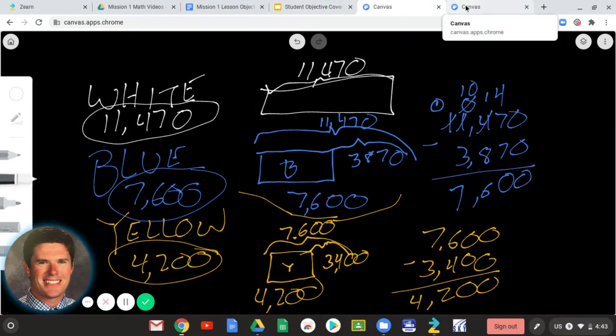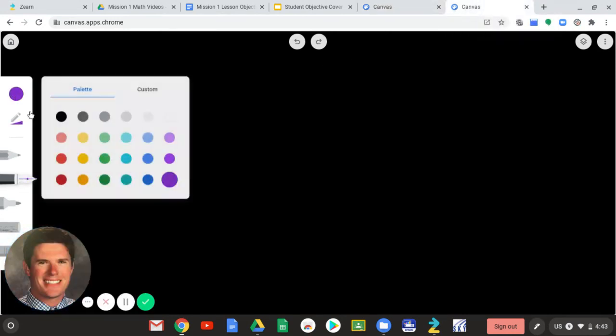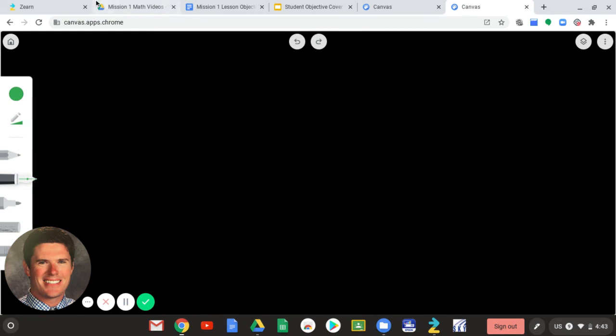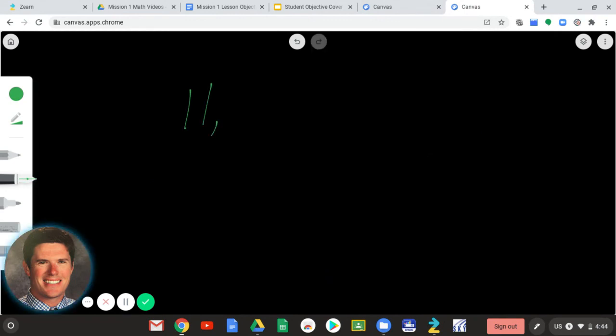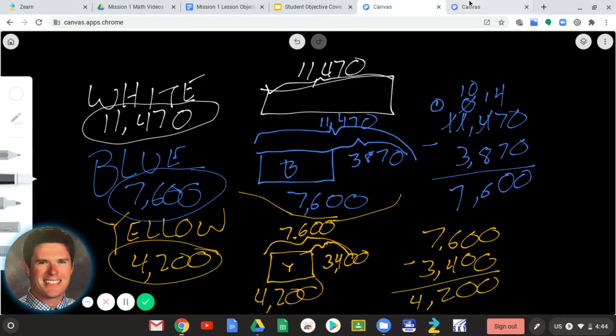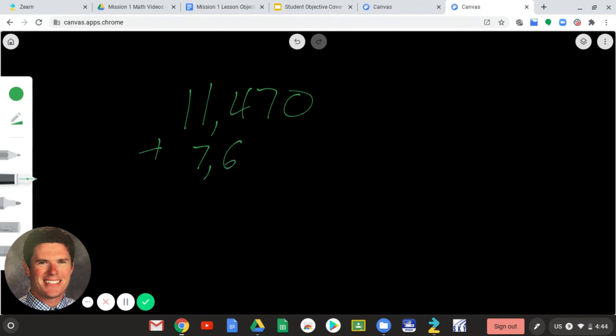So, I'm going to add them up, and I'm just going to do two at a time. So, if I had, let's start by adding my white and my blue. So, my white is 11,470 plus my blue was 7,600. And if I add them, 0 plus 0 is 0, 7 plus 0 is 7, 6 plus 4 is 10. So, I carry the 1. Now, 1 plus 7 is 8, plus 1 is 9, and 1 plus nothing is 1. So, my white and blue together are 19,070.